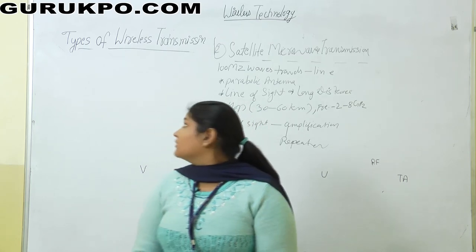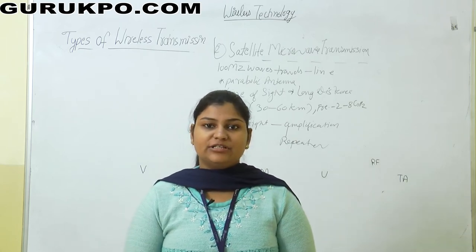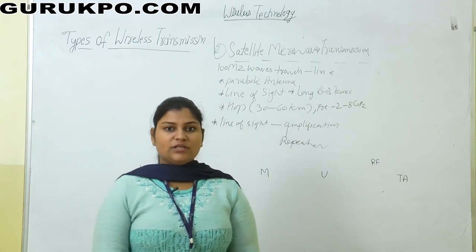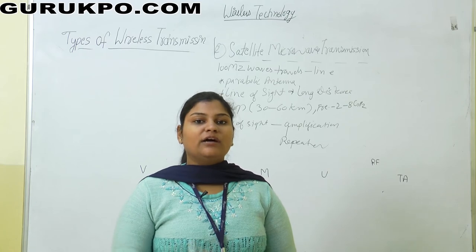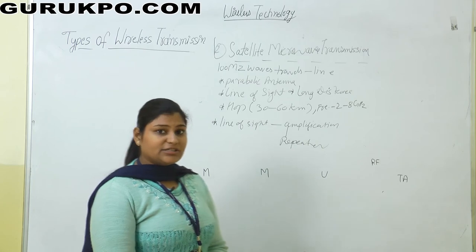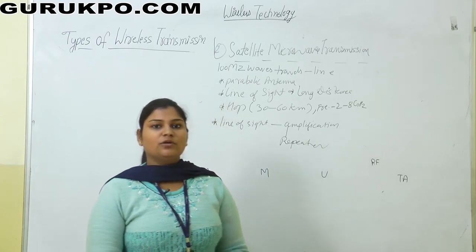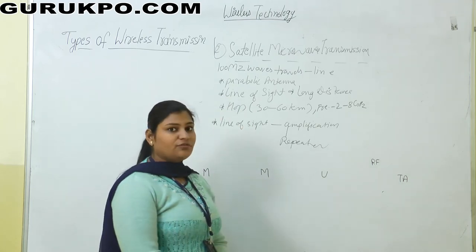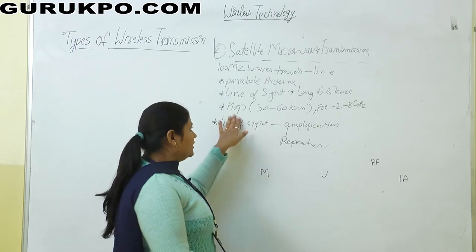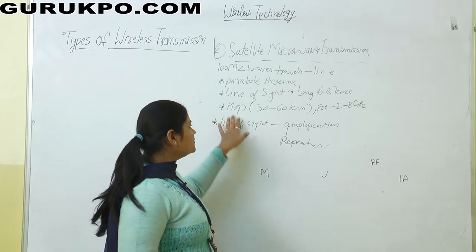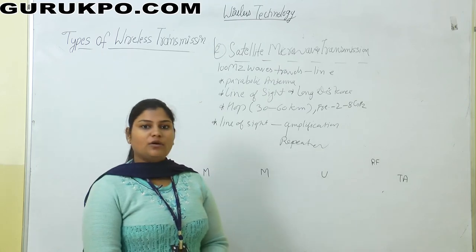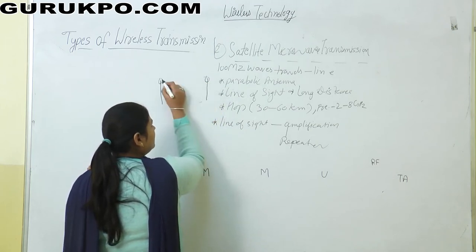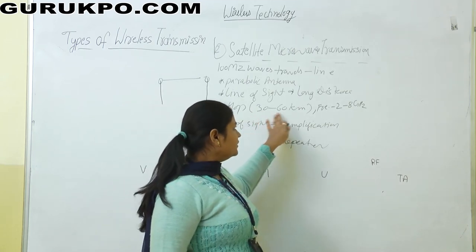In radio transmission, signals were omni-directional. In satellite microwave transmission, waves go unidirectional — they pass through in one direction. When signals go in one direction, two antennas are situated and signals travel in one line. This line of sight concept is used in satellite microwave transmission for very long distances. There is also a term 'hop' — when two antennas are situated and signals travel a long distance, it makes one hop. One hop is between two antennas and may cover 30 to 60 kilometers.